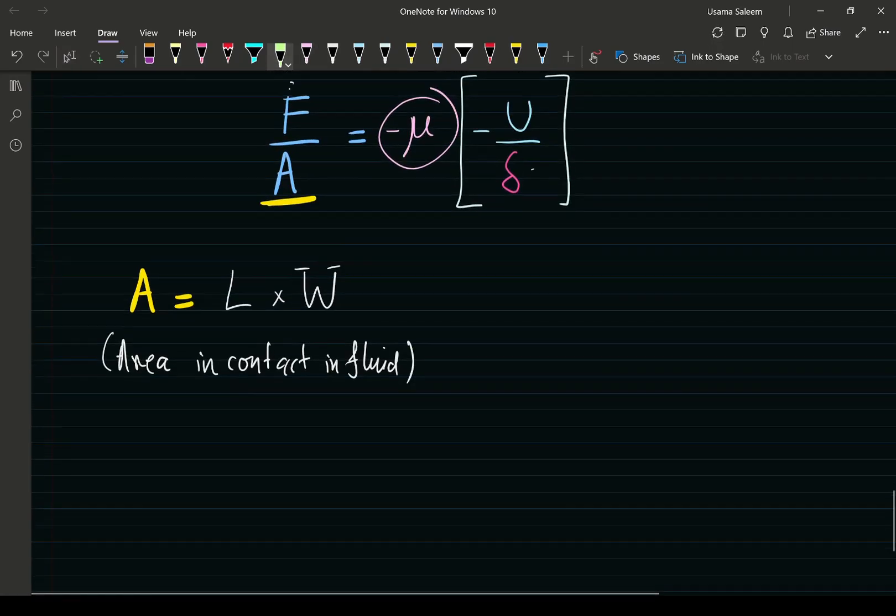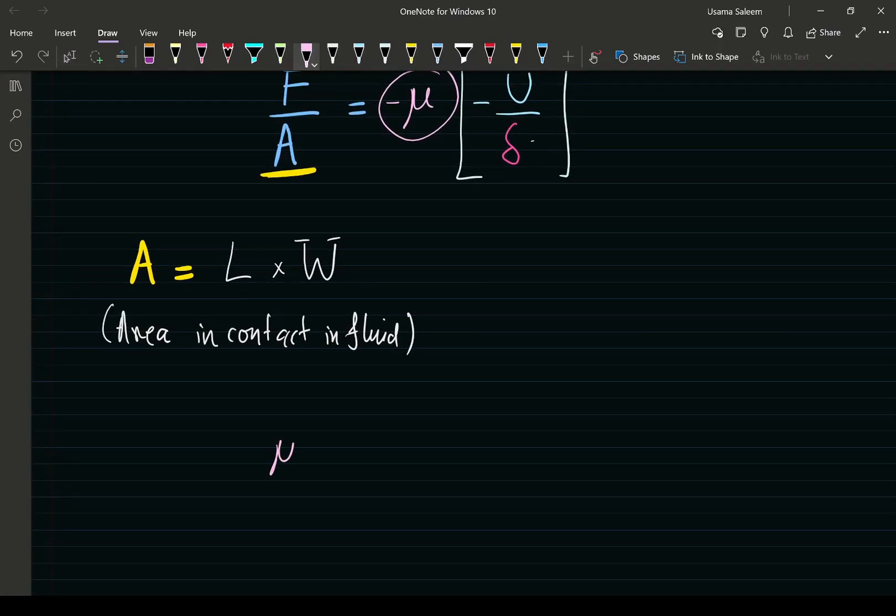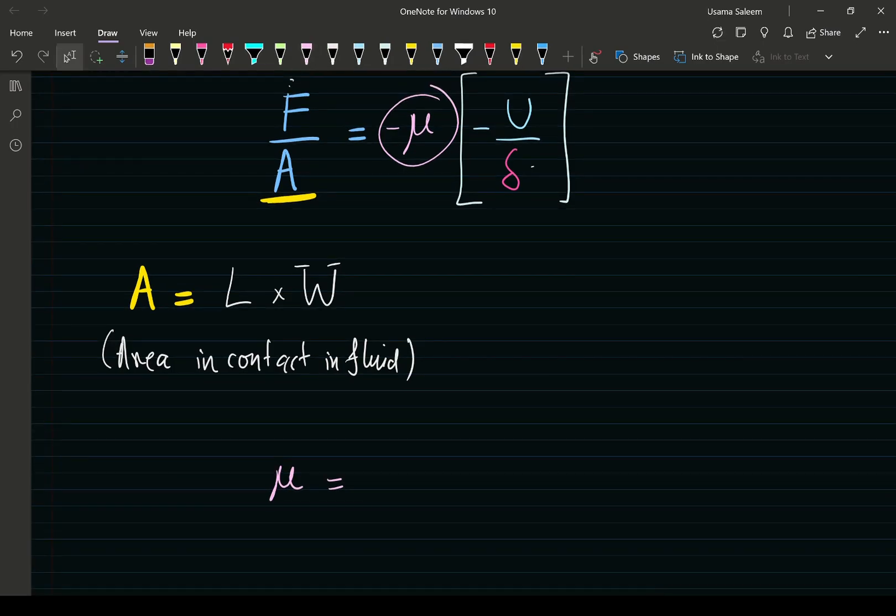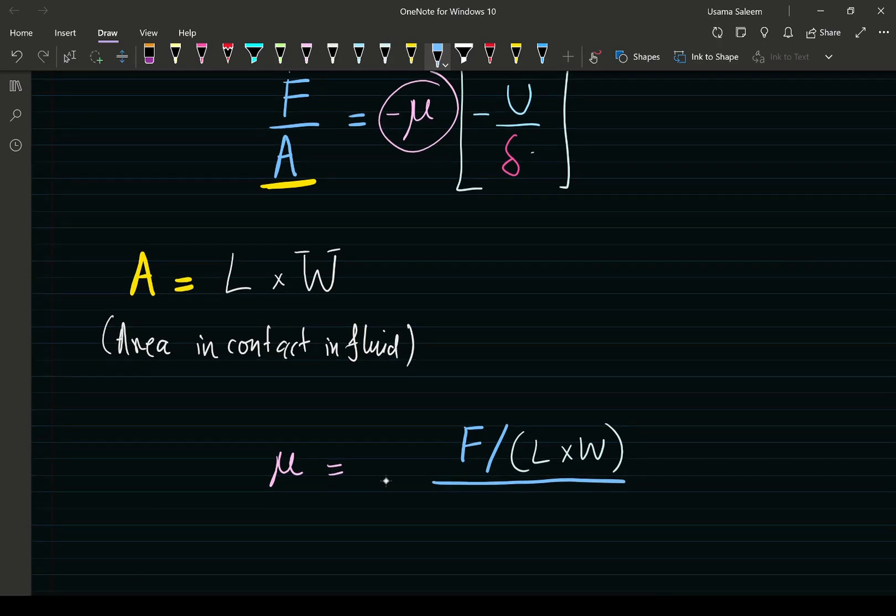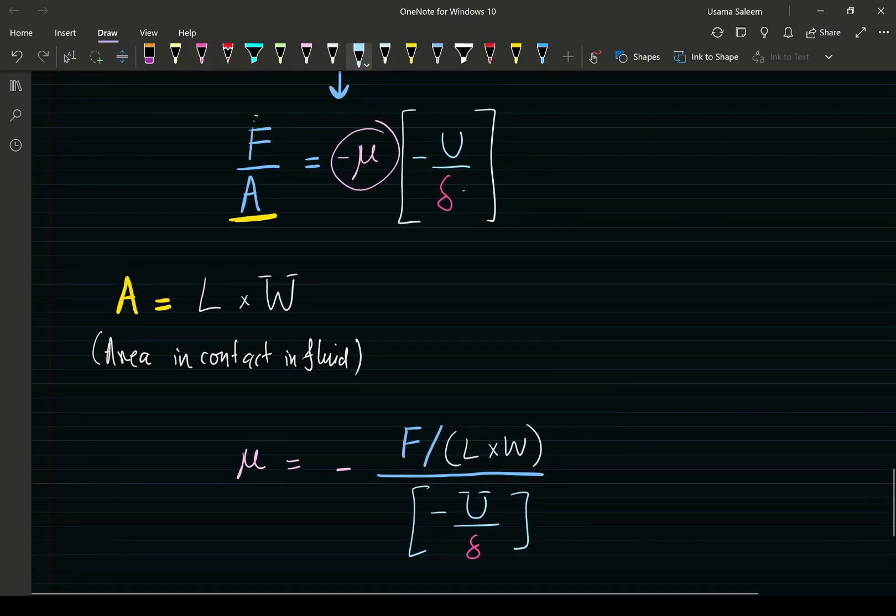The viscosity of a fluid can be calculated using the Couette flow application. If I do my algebra correctly, force divided by length times w, that's the area, all divided by the velocity gradient, negative u over delta. Don't forget the negative sign.